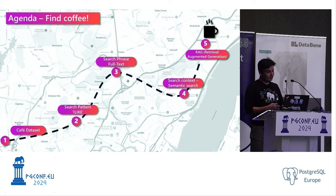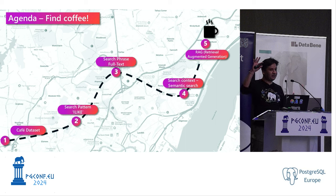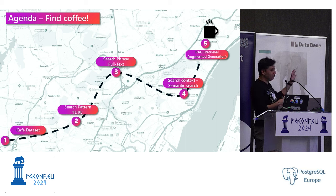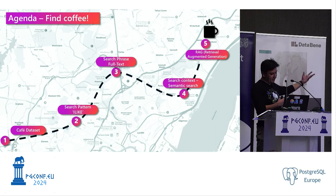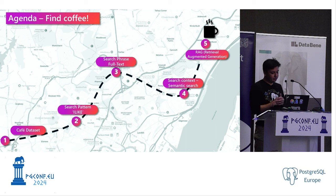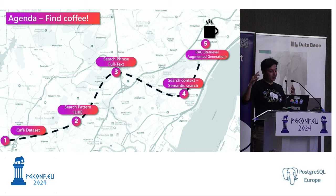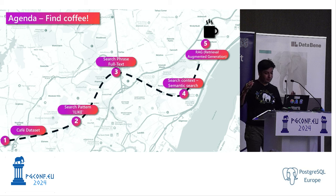In this session, I'm using a map — like Dora the Explorer uses a map to find things. We'll start with a cafe dataset, then search using the ways we've been searching in Postgres for years, do some advanced full-text search, and at steps four and five move on to something more exciting: you can even communicate with your database and just tell it what you want, all using your dataset stored inside the database.